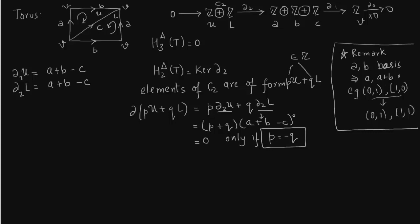Or you can say it as generated by U - L. So there is a single generator, so the kernel is nothing but Z, integers itself, and the generator is a + b - c. And this is now the H_2.